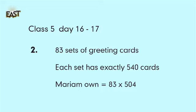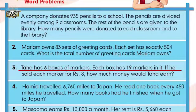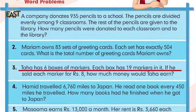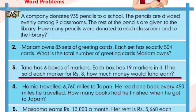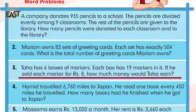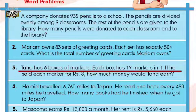Let's move to the third question. Each box has 19 markers in it. Similar to Mariam's second question where we had cards and sets, now Taha has boxes of markers and each box has 19 markers. If he sells each marker for 8 rupees, how much money will he earn? Notice this question has two parts. First: how many total markers does he have? There are 6 boxes and each box has 19 markers — that is our first part.